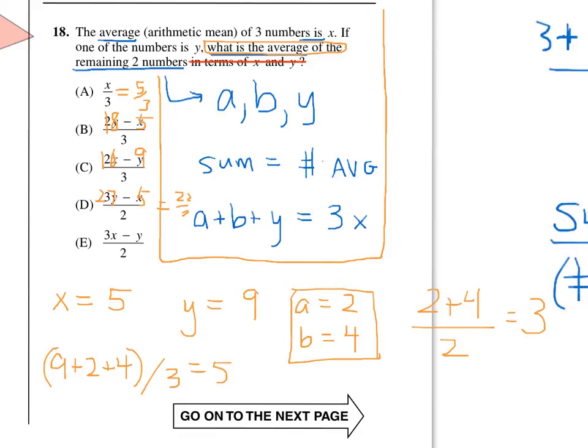And, of course, 3x minus y is 15 minus 9, which is 6 over 2. So, that tells us that E is our answer.